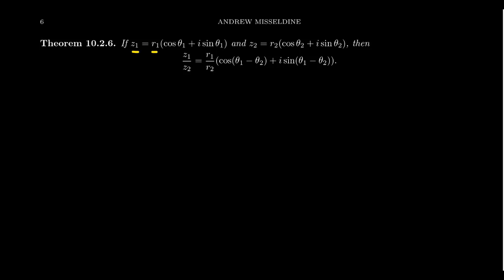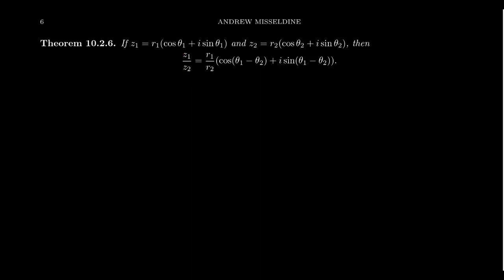Take for example z1 = r1(cos θ1 + i sin θ1), where θ1 is its argument, and z2 = r2(cos θ2 + i sin θ2), where θ2 is the argument of z2. When you divide the two complex numbers, the quotient z1/z2 equals (r1/r2)(cos(θ1 − θ2) + i sin(θ1 − θ2)) — you divide the moduli and subtract the arguments.